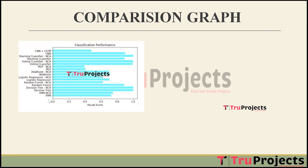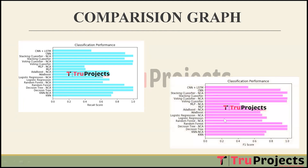The recall comparison graph has recall score on the x-axis and algorithm name on the y-axis. Recall, also known as sensitivity or true positive rate, measures the model's ability to correctly identify all relevant instances; it is the ratio of true positives to actual positive instances (true positives plus false negatives). The F1 score is the harmonic mean of precision and recall, calculated as 2 × (precision × recall) / (precision + recall), providing a single metric that balances both false positives and false negatives.